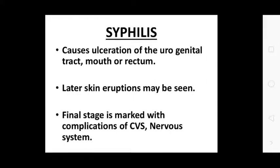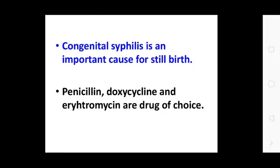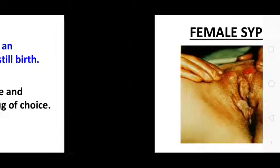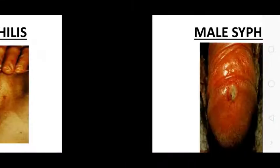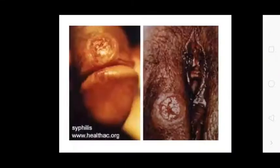Syphilis causes ulceration of the urogenital tract, mouth, and rectum. Later, skin eruptions may be seen. The final stage is marked by complications in the cardiovascular and nervous system. Congenital syphilis is an important cause of stillbirth. Penicillin, doxycycline, and erythromycin are drugs of choice.